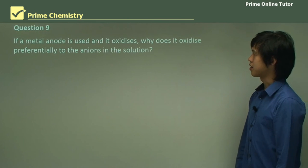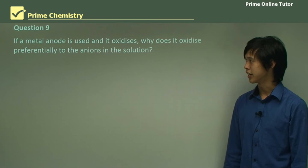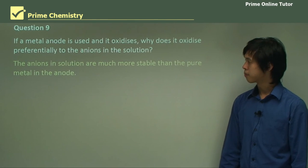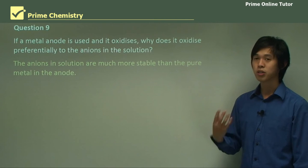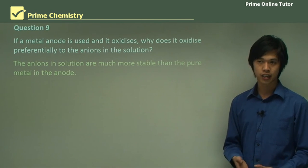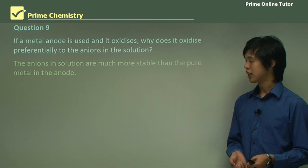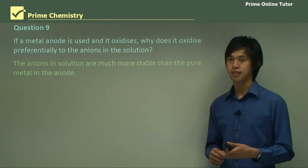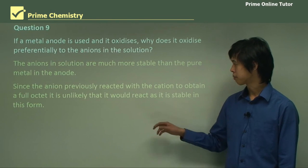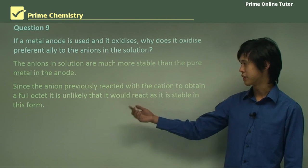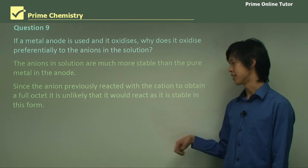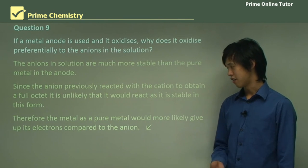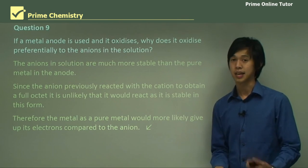If a metal anode is used and it oxidizes, why does it oxidize preferentially to the anions in solution? Because anions in solution are more stable — when an ion is produced it naturally has a full octet shell, making it stable. The metal may not have that full octet structure, so it may not be as stable as the anion in solution. Since the anion previously reacted with a cation to obtain a full octet, it's unlikely to react further as it is already stable. Therefore, the metal as a pure metal is more likely to give up its electrons compared to the anion because it's less stable.